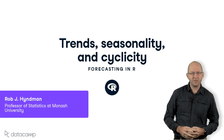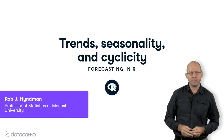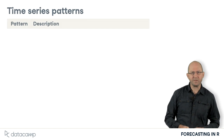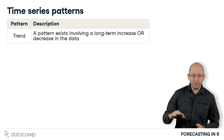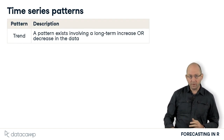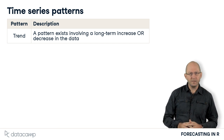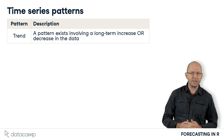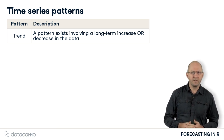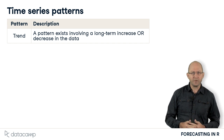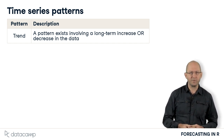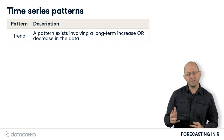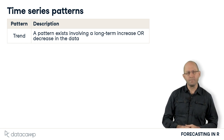Some time series patterns occur so frequently that we give them names. A trend occurs when there is a long-term increase or decrease in the data. This is deliberately a little vague, as a trend is not a well-defined mathematical term. But if I talk about a trend, I mean a general tendency for the time series to go up over time or down over time.